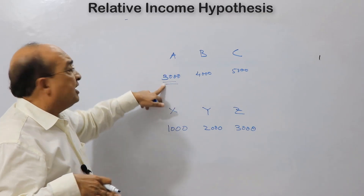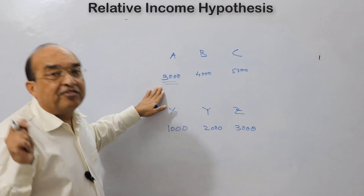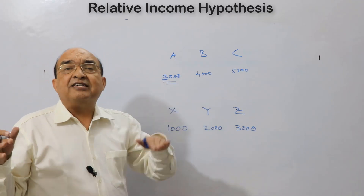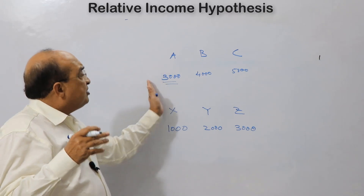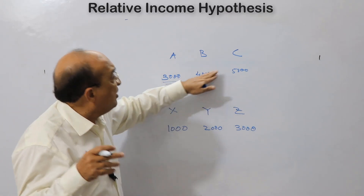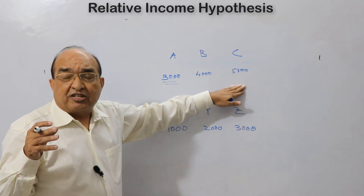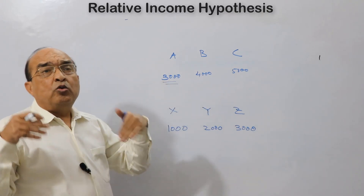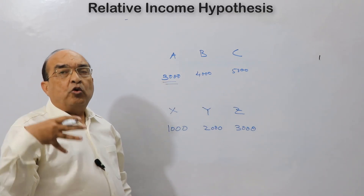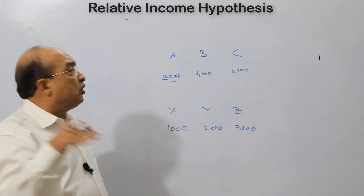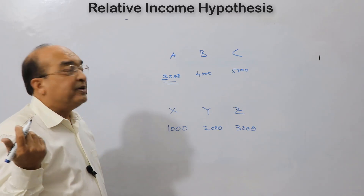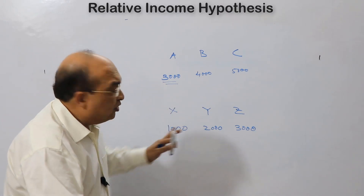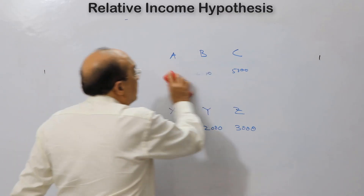Although Z has a 3,000 income, in relation to those with whom he interacts socially, he is at the highest level. Meanwhile, A with a much lower income is the poorest in his group. This relative position affects their consumption expenditure — A is influenced by B's consumption, and B by C's. When B's consumption rises, A will try to imitate it so as to maintain the same ratio of consumption expenditure.